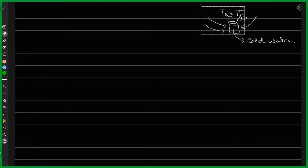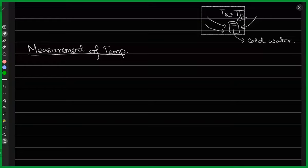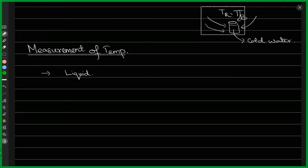We have some understanding of what temperature is. Now let's ask: how do I measure this temperature? It's a number at every point in space — how do I measure it? We have different tools for that. We can use different properties of substances to measure temperature. For example, suppose I have a liquid. We know that when you heat a liquid, it behaves in a particular way.